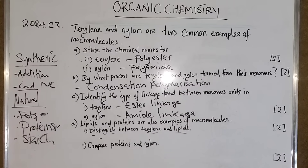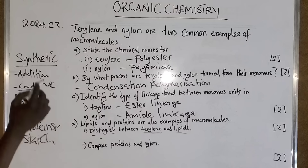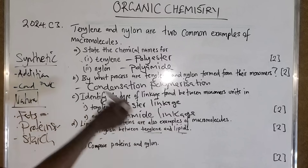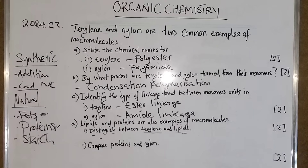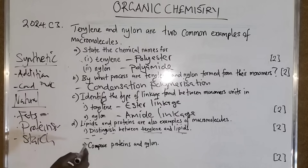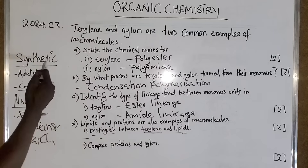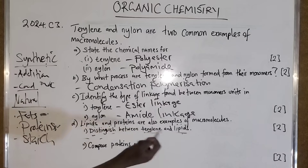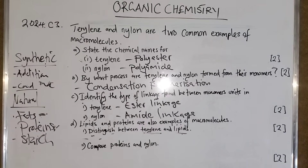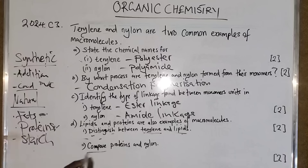Terylene is a synthetic polymer while lipids are a natural polymer. Now compare proteins and nylon — compare meaning find similarities. What is common between proteins and nylon? They both have an amide linkage.